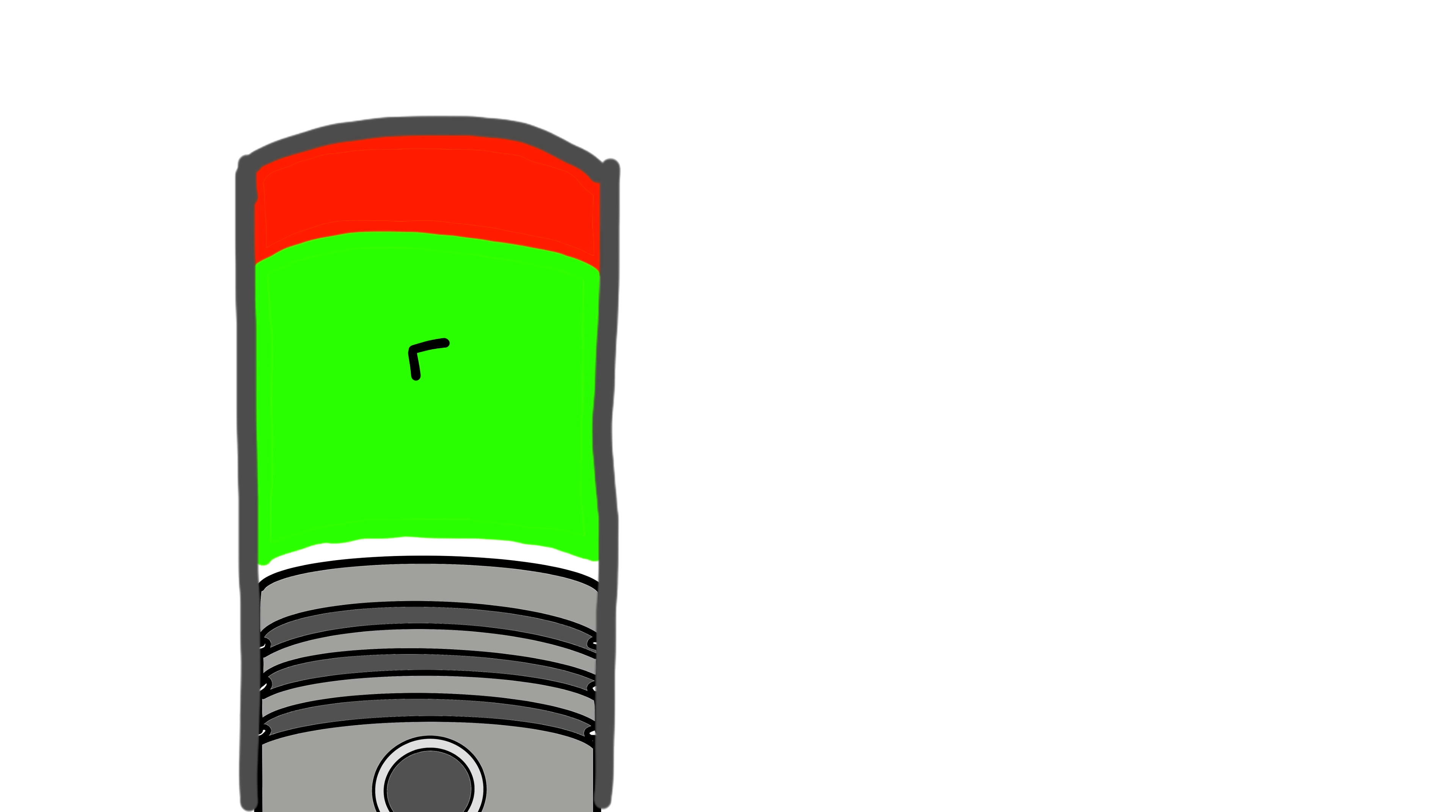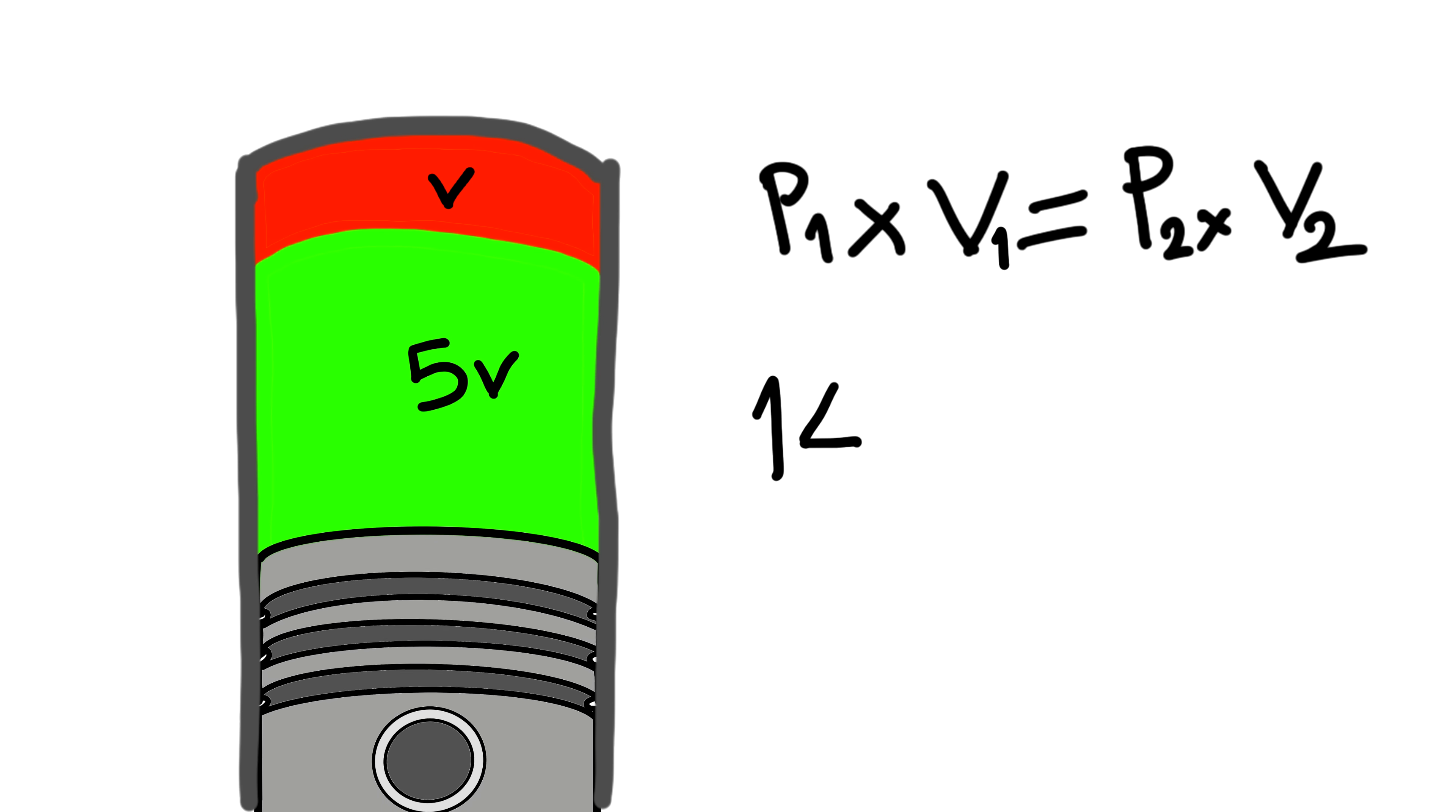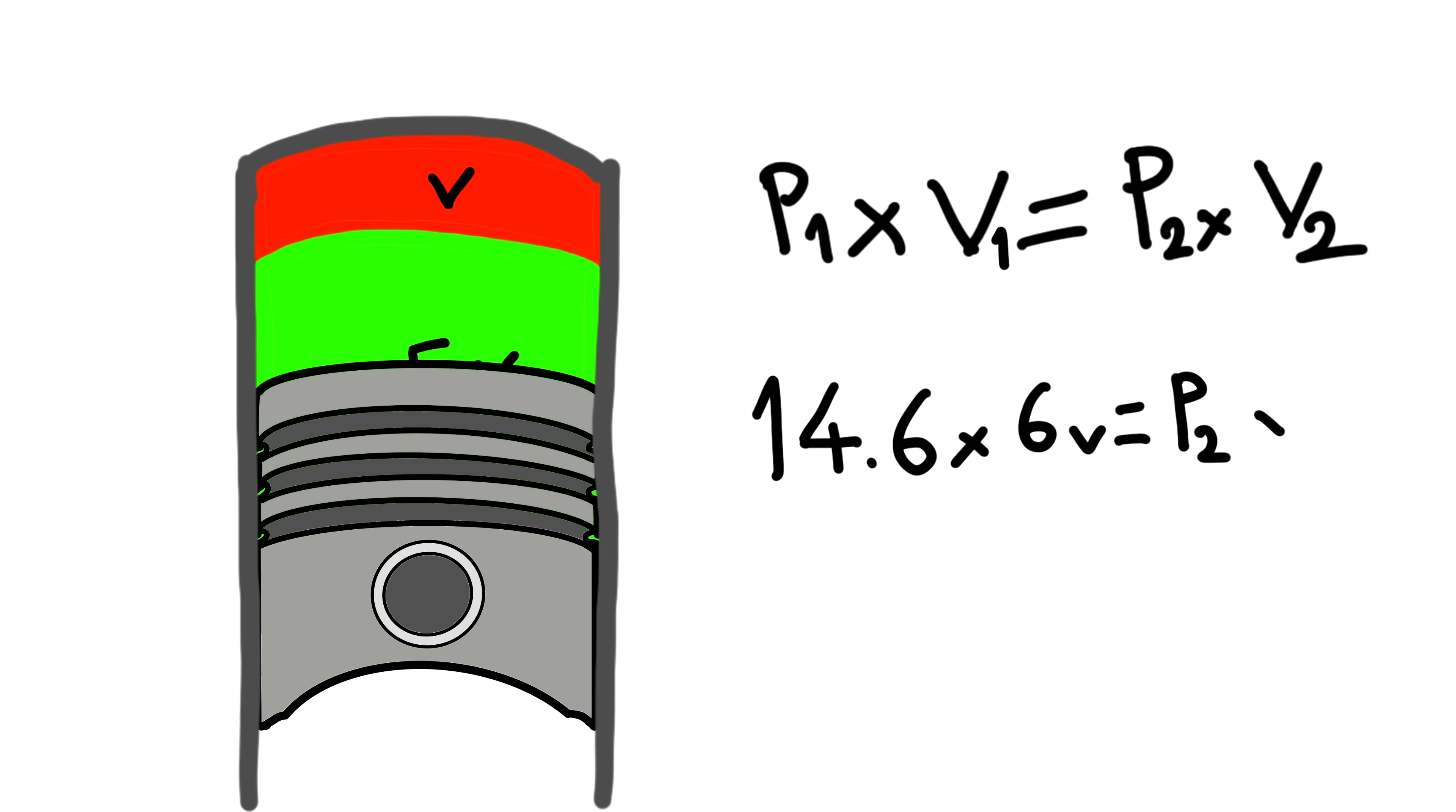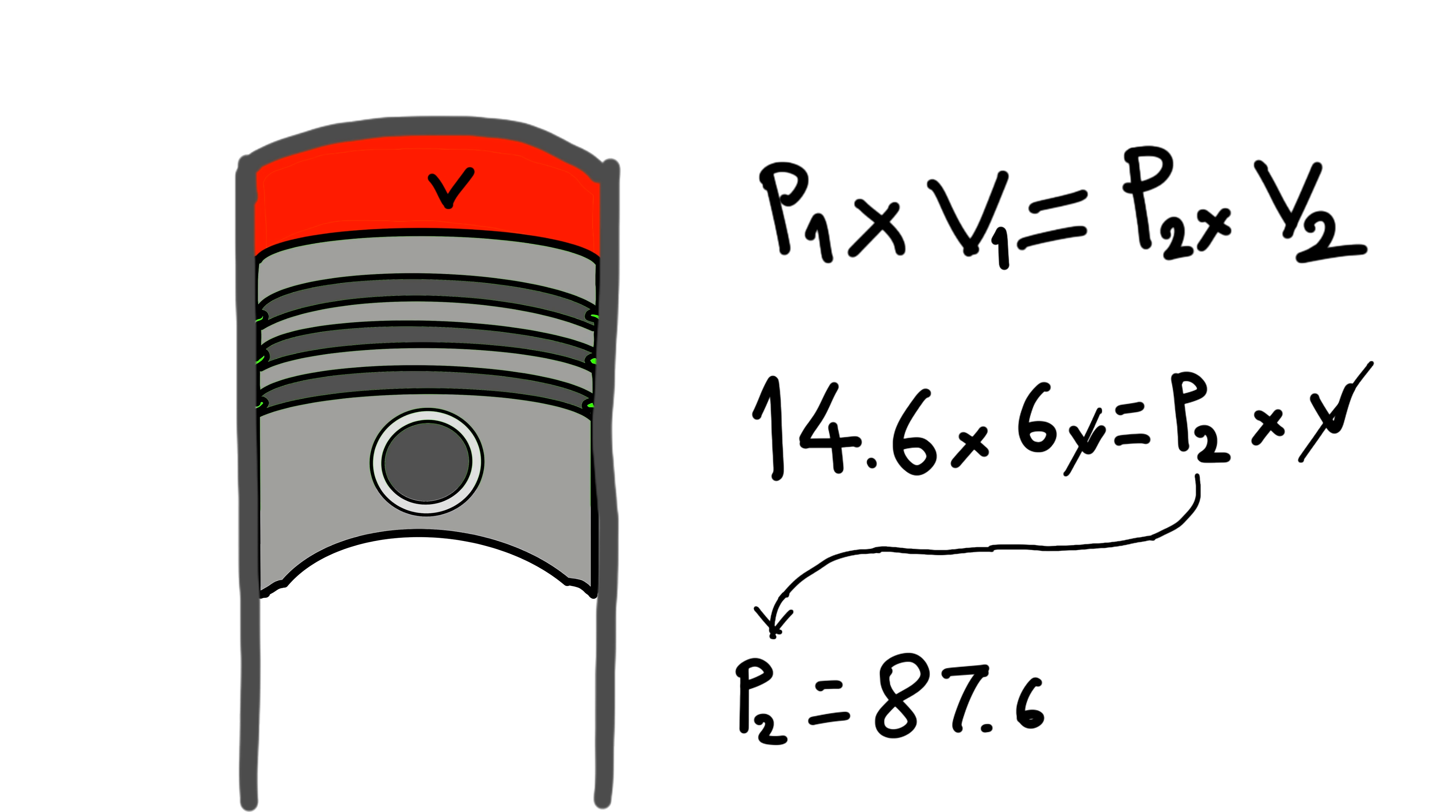First one is the ratio between the space inside the cylinder when the piston is at the bottom to the space when it's on top. Let's remember Boyle's law: P1 times V1 equals P2 times V2. When the piston is at the bottom the cylinder is filled with air at atmospheric pressure which is 14.6 PSI, but when the piston goes up and compresses the air the pressure will increase with the same ratio that the volume decreases. So if the volume drops 6 to 1, the pressure will be 6 times as high compared to the beginning.